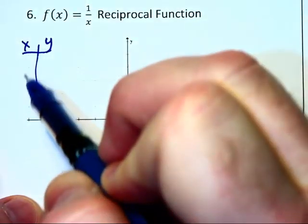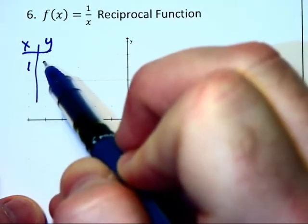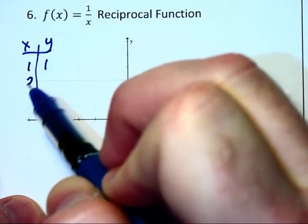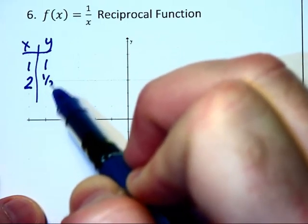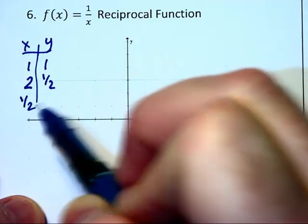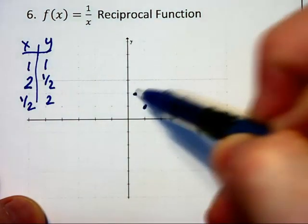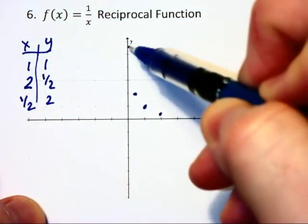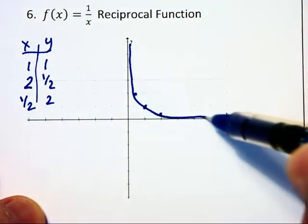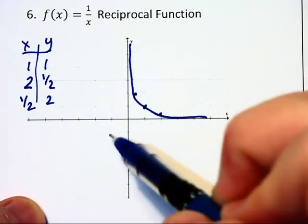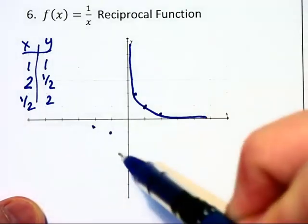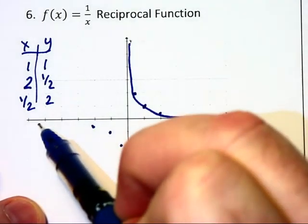You cannot substitute in 0 but if you substitute in 1, 1 over 1 is 1. If you substitute in 2 you get 1 half. If you substitute a half in you get 2. And so that gives us 3 points right here which give us a graph up in the top right corner in the first quadrant.